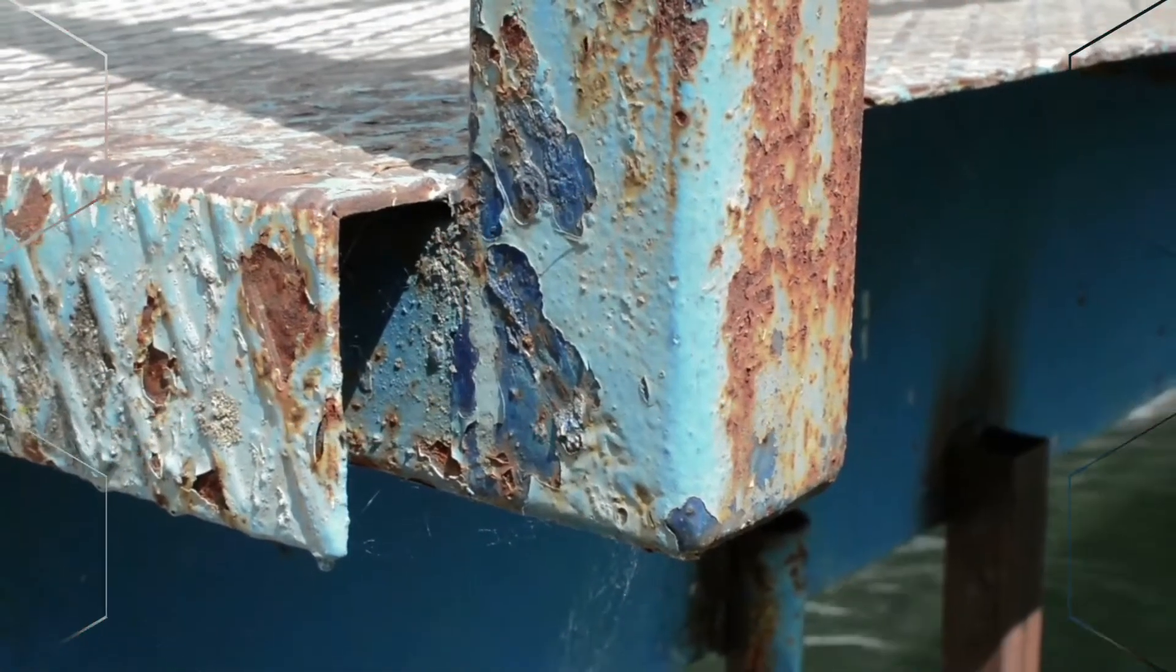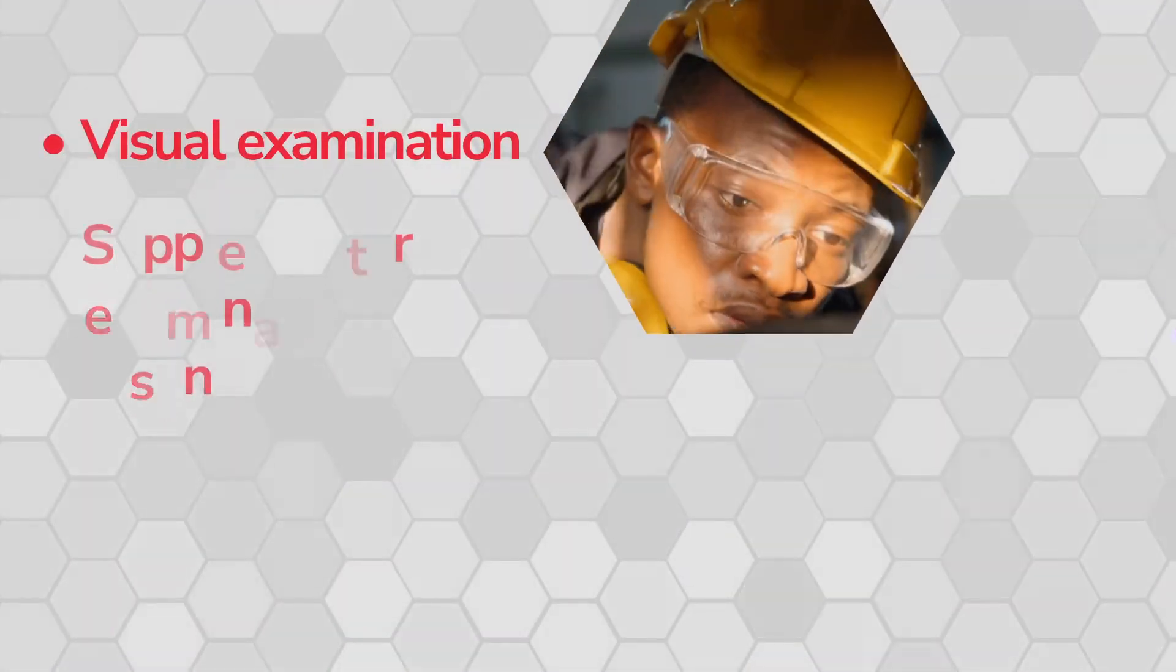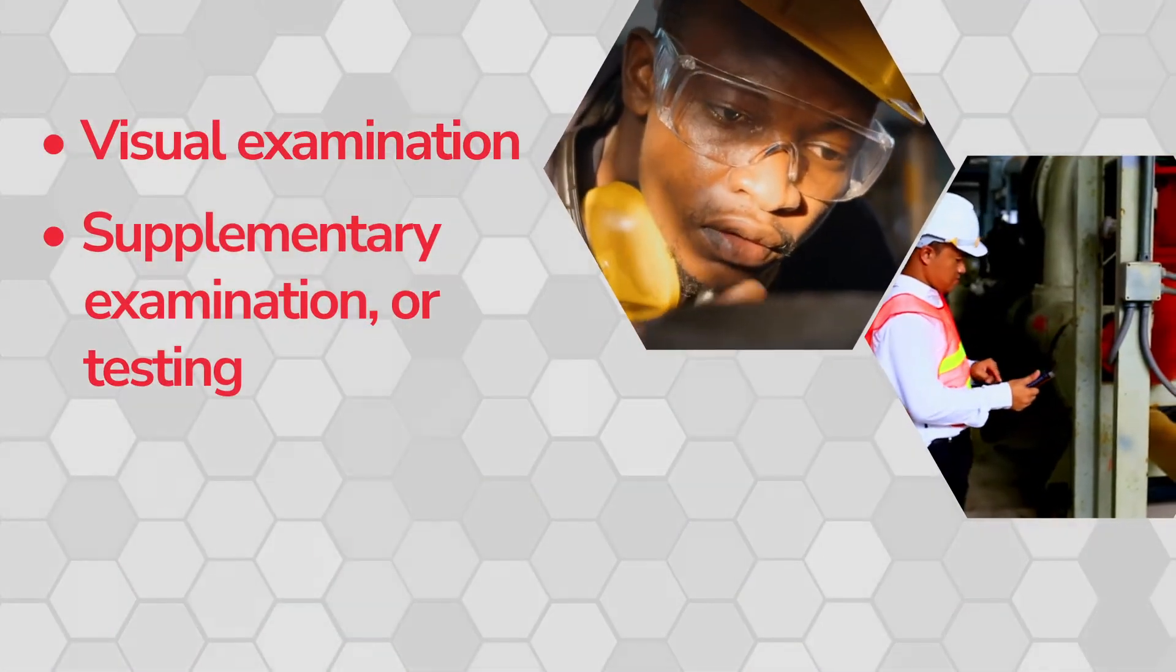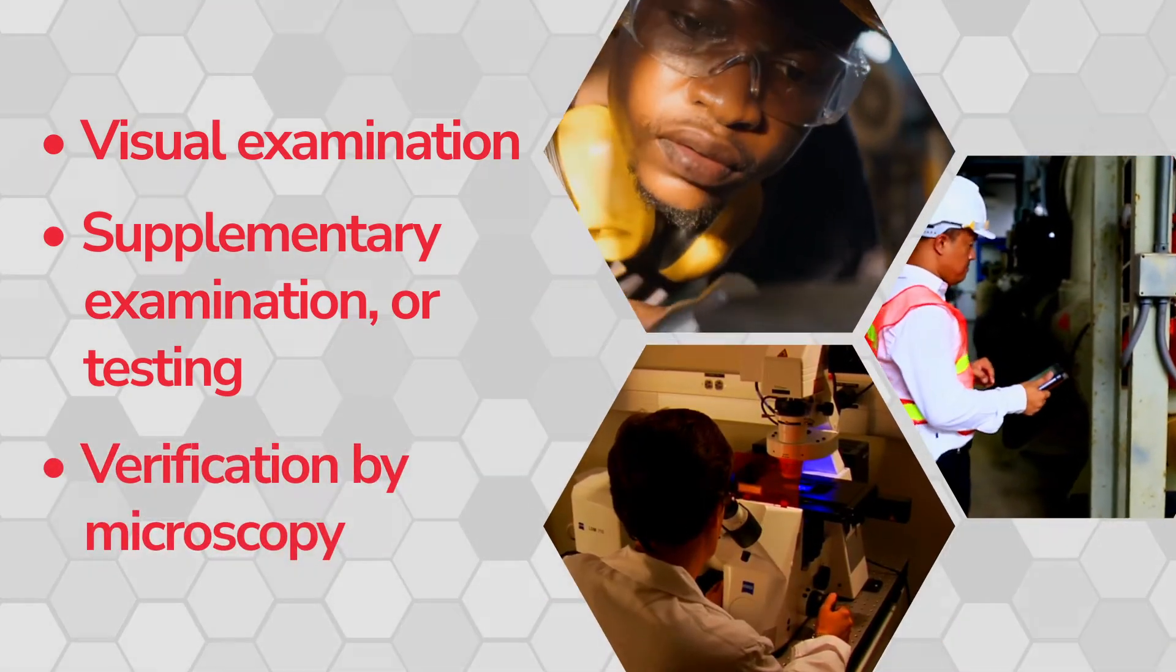Corrosion can be identified in one of three ways: visual examination, supplementary examination or testing, verification by microscopy.